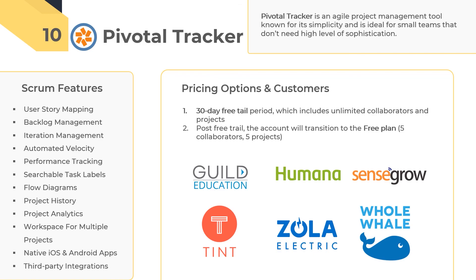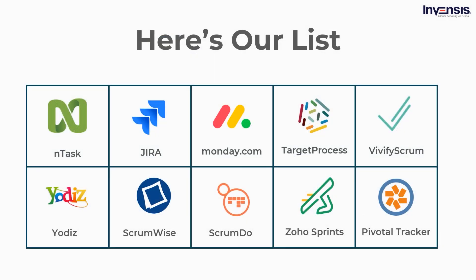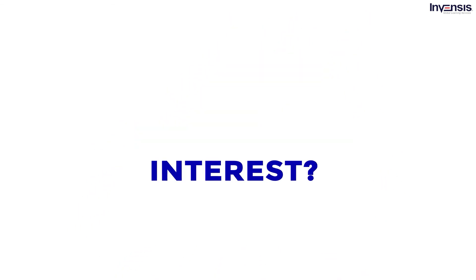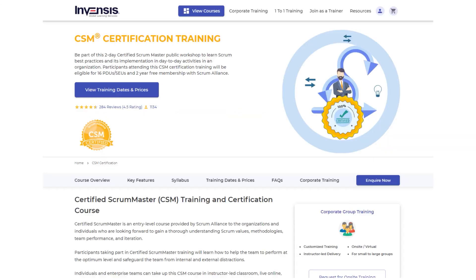That's it guys! You have just viewed a list of the top 10 Scrum tools of 2021 recommended for Agile projects. Of course, the above list barely scratches the surface of the current Scrum project management tools market. The key is finding what works best for your team. At Invenses Learning, we provide Scrum Alliance accredited certified Scrum Master training worldwide. Enroll now and take the next step in your pursuit to master Agile.